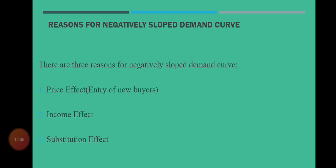پہلے بہت سارے consumers، commodity کی قیمت زیادہ ہونے کی وجہ سے، اس commodity کو نہیں خرید سکتے تھے — buyers کی تعداد کم تھی کیونکہ price نسبتاً زیادہ تھی۔ جب commodity کی price کم ہونے لگی تو buyers اب اس commodity کو خریدنے کی position میں آ گئے۔ پہلے کچھ buyers commodity کو بالکل نہیں خرید پاتے تھے، لیکن جیسے price کم ہوتی چلی گئی، وہ بھی enter ہو گئے اور commodity کو purchase کرنے کی position میں آ گئے — اس لیے اسے price effect کہتے ہیں۔